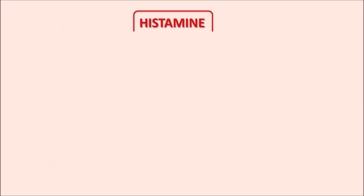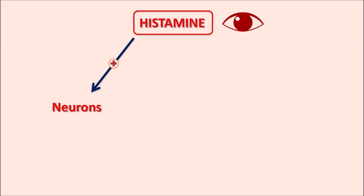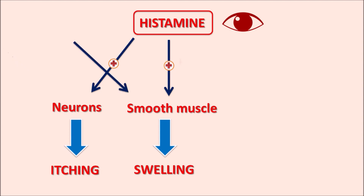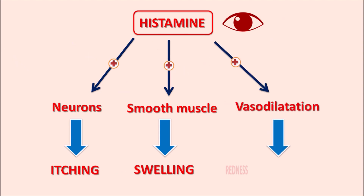In allergic conjunctivitis, histamine acts on the eye. It can stimulate neurons associated with the ophthalmic system, resulting in an itching response. It can also act on the smooth muscle of the eye, resulting in increased swelling, and it can increase vasodilation resulting in redness of the eye. All these actions are related to histamine release.